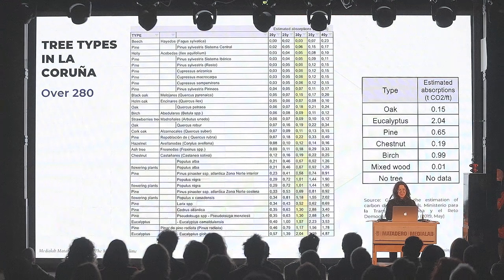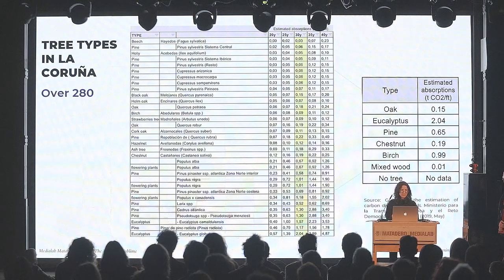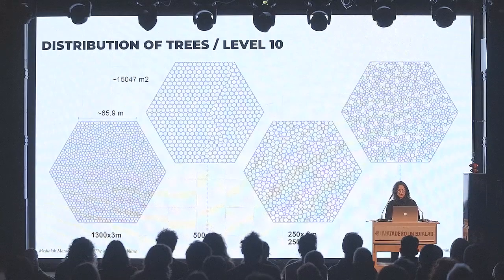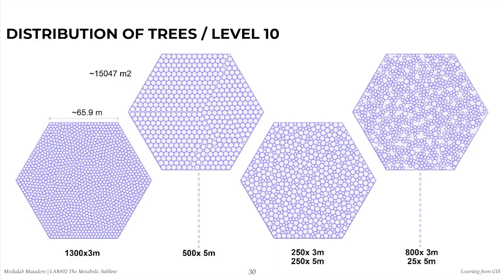We found the types of trees in A Coruña and their correlating carbon dioxide absorption based on tree age. In our model, we work with the uptake after 30 years, since that is when their carbon dioxide efficiency is highest. This slide shows an experimental setup for determination of the average amount of trees in one cell at level 10 of the H3 grid. For our prototype, we use an average of 800 trees per cell to make the calculations.